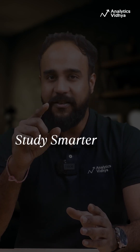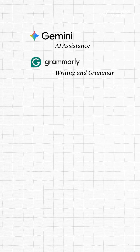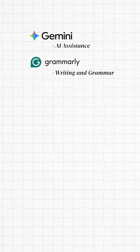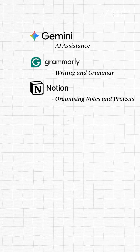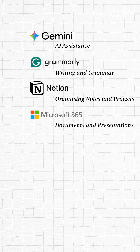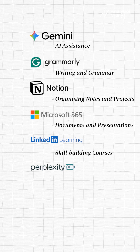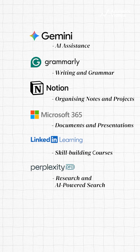First, study smarter, write better, and learn faster with discounts on Google Gemini Pro for AI assistance, Grammarly EDU for writing and grammar, Notion for organizing notes and projects, Microsoft 365 Education for documents and presentations, LinkedIn Learning for skill-building courses, and Perplexity Pro for research and AI-powered search.